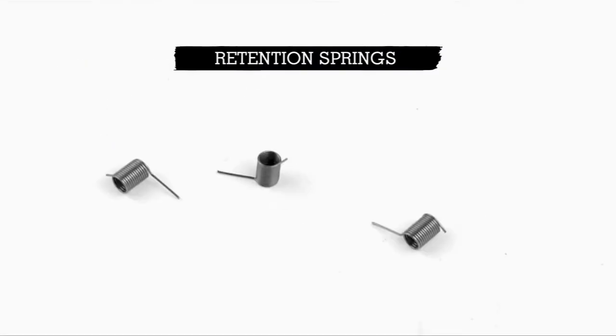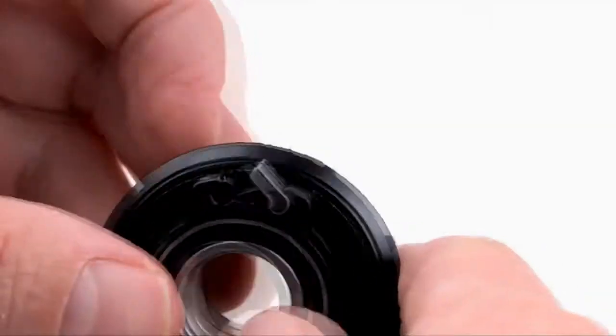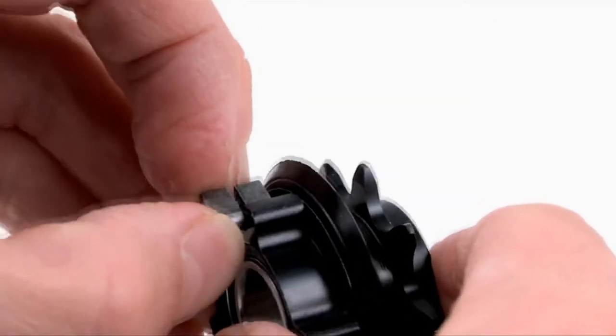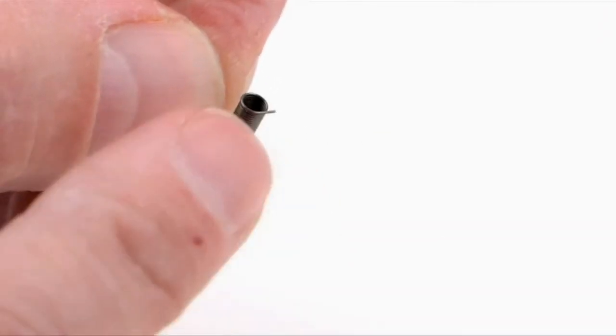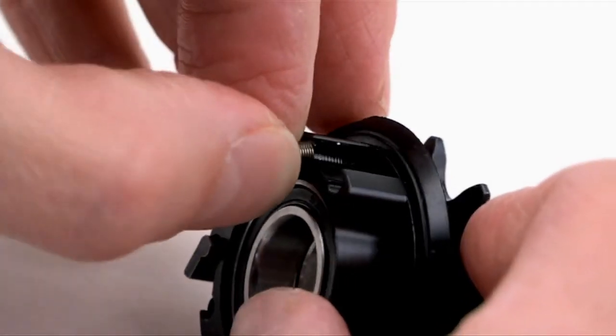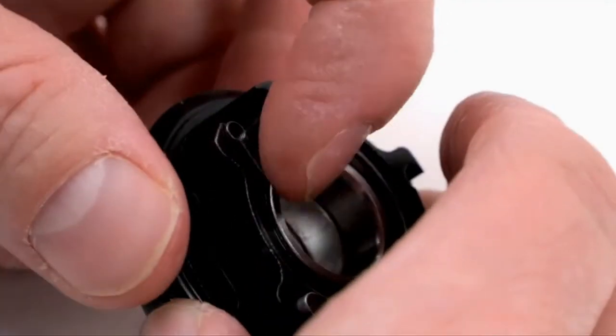Now let's take the driver and switch out the springs. It is best to do this one pawl at a time so that there is no confusion. With your finger, remove the pawl and spring. Now insert the retention spring with the stopper touching the edge of the driver. The part that actually touches the pawl will be pointing downward.